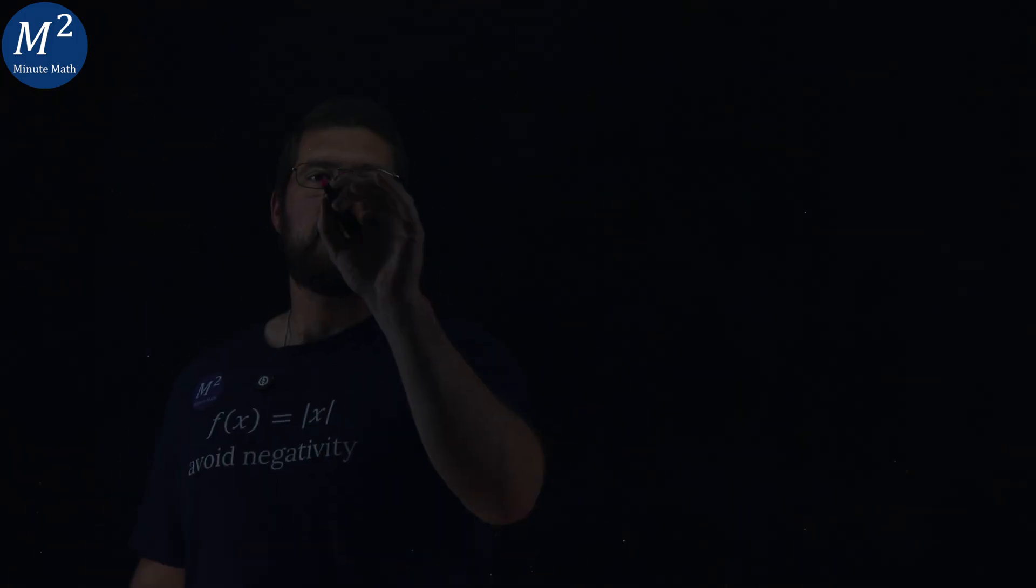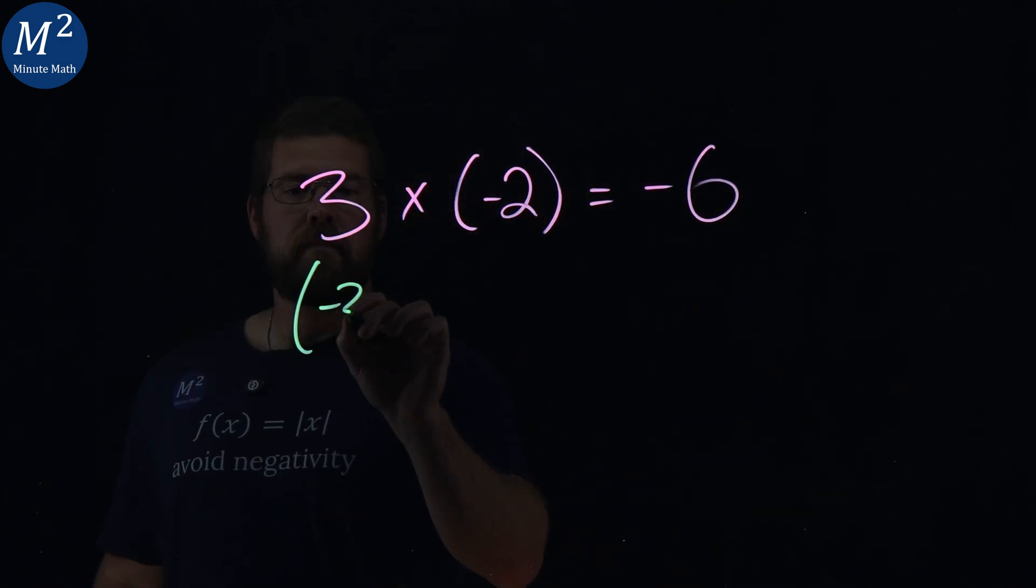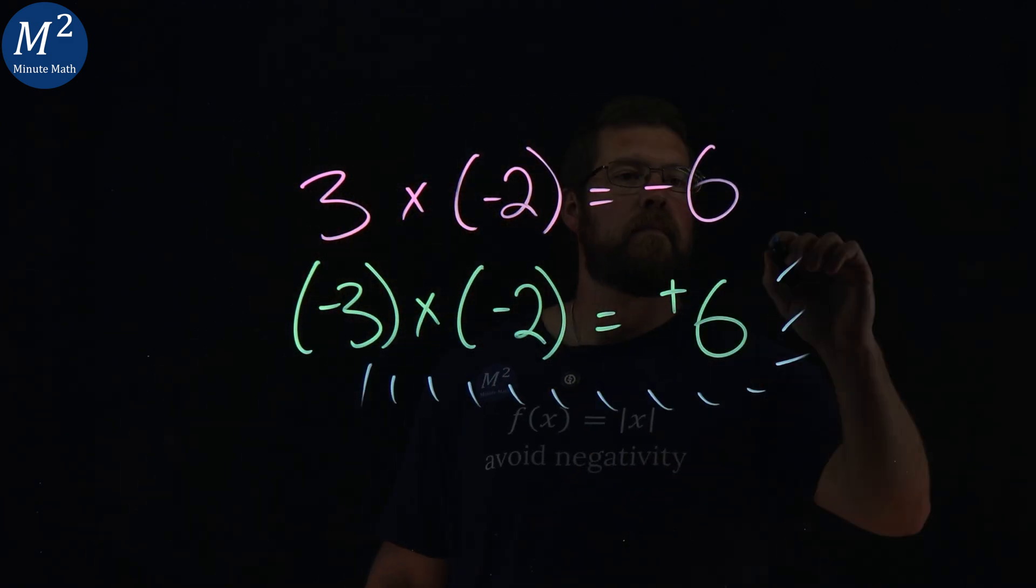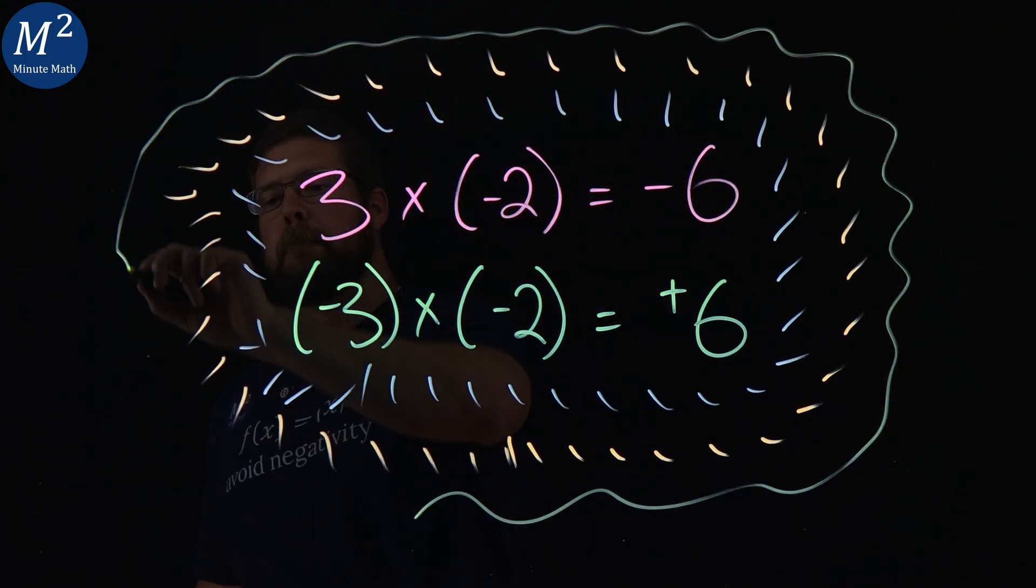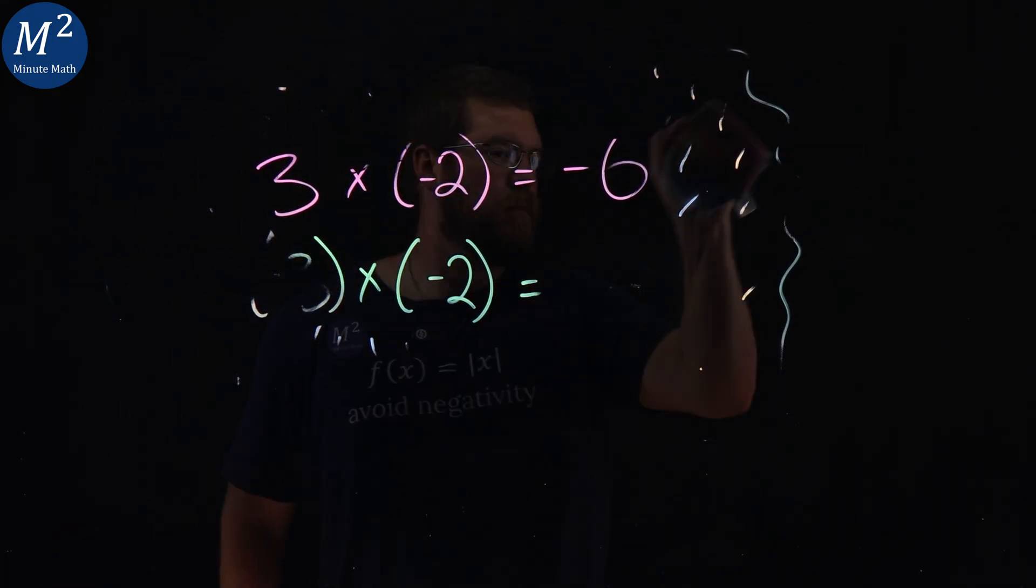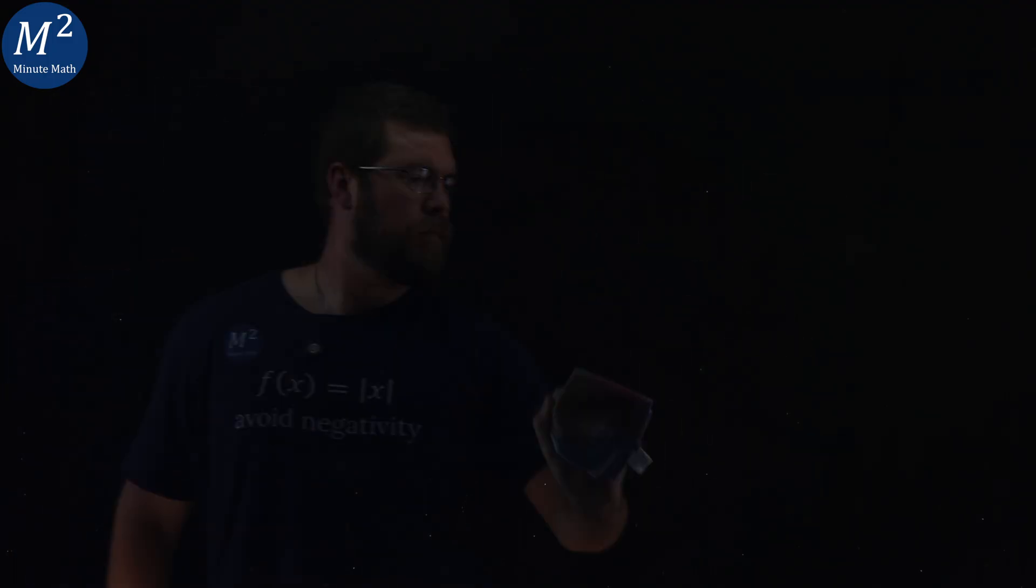So, a negative times a negative must be positive. Not because your teacher said so, but because math patterns and the distributive property demand it. Drop a like if this visual made the rule finally make sense. And as always, thanks for watching.